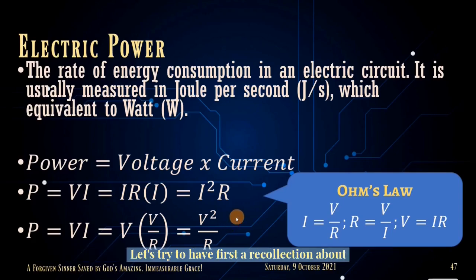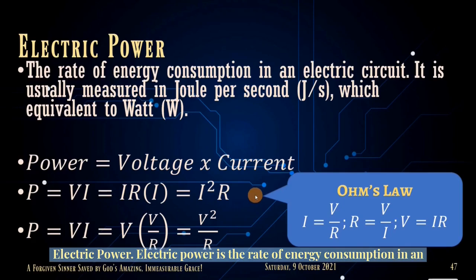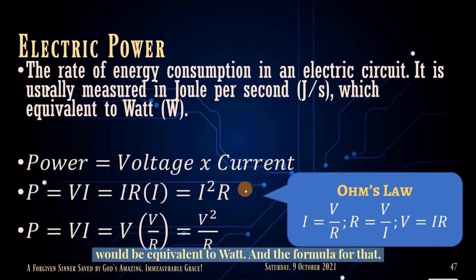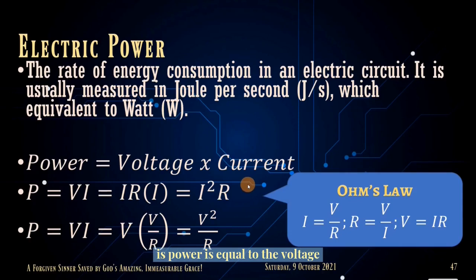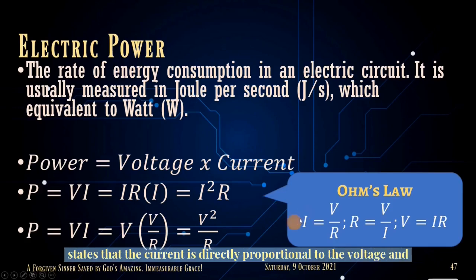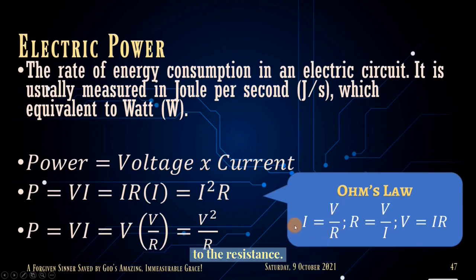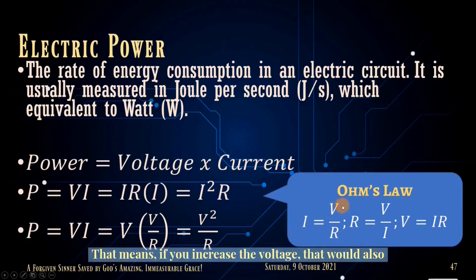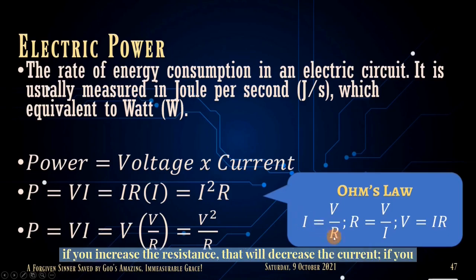Let's first recall electric power. Electric power is the rate of energy consumption in an electric circuit, measured in joules per second (watts). The formula is P = V × I, where V is voltage and I is current. Ohm's law states that current is directly proportional to voltage and inversely proportional to resistance. Increase the voltage and current increases correspondingly; increase the resistance and current decreases.